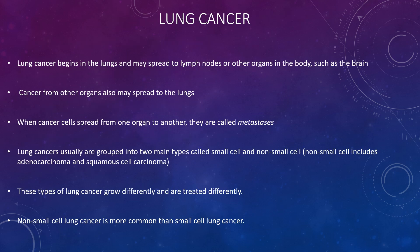Lung cancer begins in the lungs and may spread to lymph nodes or other organs in the body. Cancer from other organs can also spread to the lungs — when cancer cells spread from one organ to another they are called metastases. Lung cancer is usually grouped into two types: small cell and non-small cell, the latter including adenocarcinoma and squamous cell carcinoma. Non-small cell lung cancer is more common than small cell lung cancer.